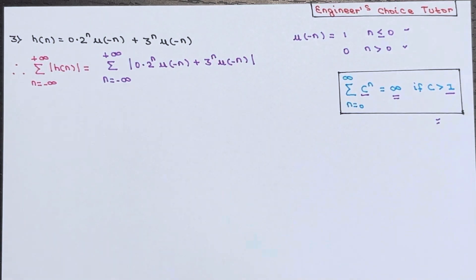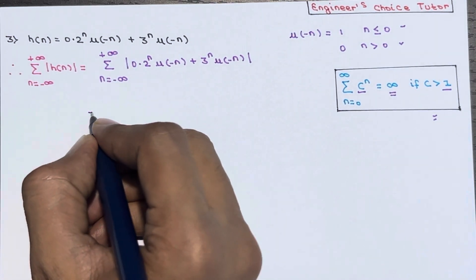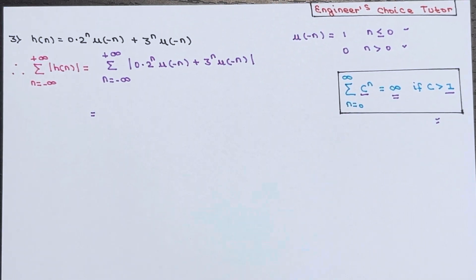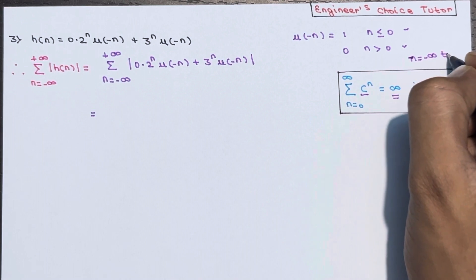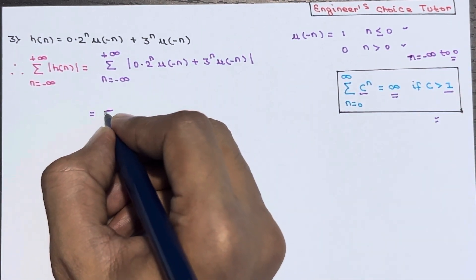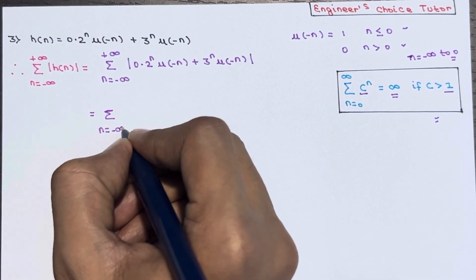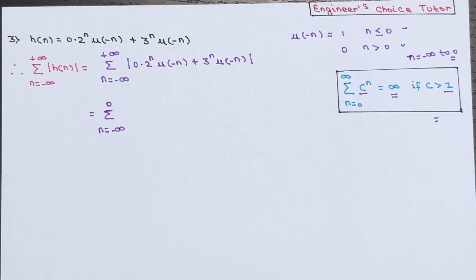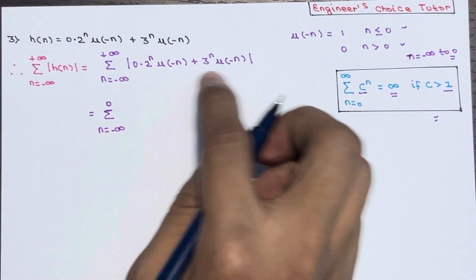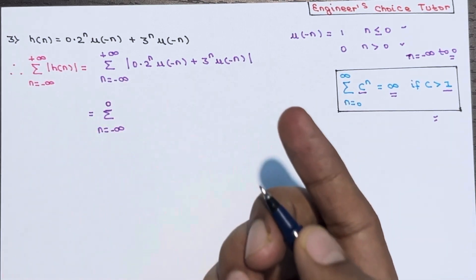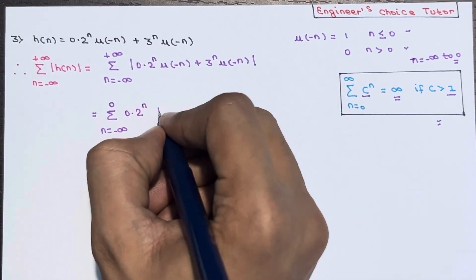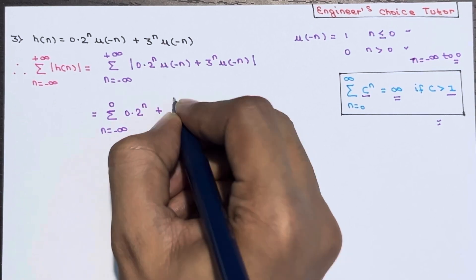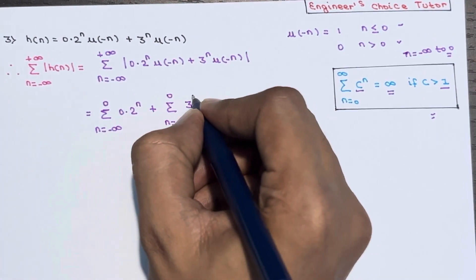Also remember: summation of c to the power n over the limit n from 0 to infinity equals infinity when the value of c is greater than 1. This formula is important. The summation becomes n from minus infinity to plus infinity of absolute value of (0.2^n * u(minus n) + 3^n * u(minus n)). Since u(minus n) is defined for n from minus infinity to 0, we write both terms as summation from n equals minus infinity to 0, where u(minus n) equals 1.